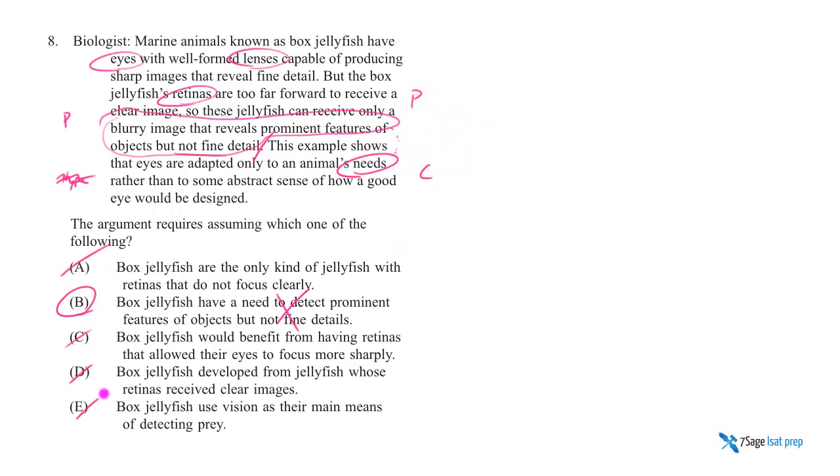So the rest are just really crap answer choices. Box jellyfish are the only kind of jellyfish with retinas that don't focus. What? Why can't there be another type of jellyfish also with retinas that don't focus? What in the world does that have to do with our argument?